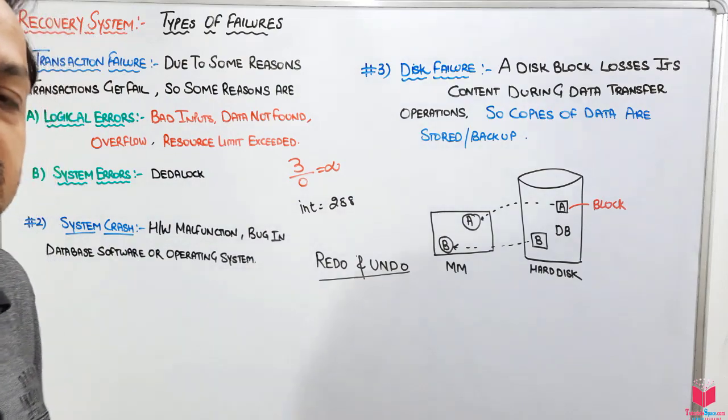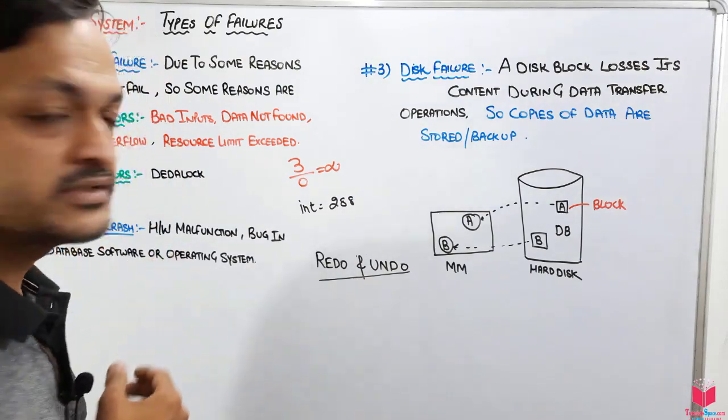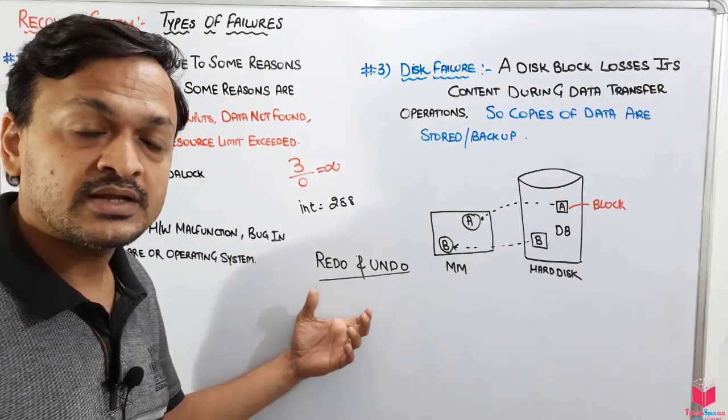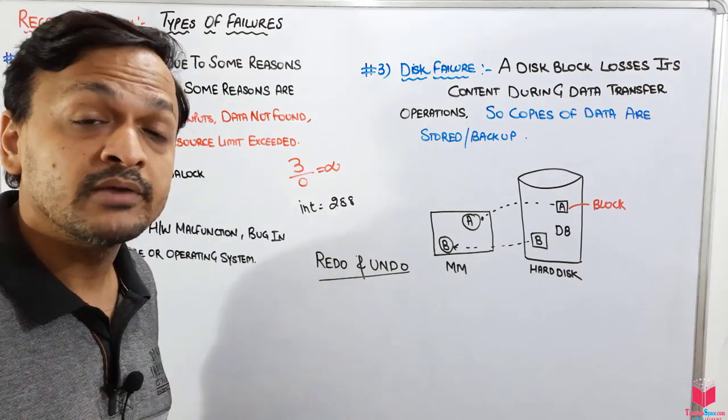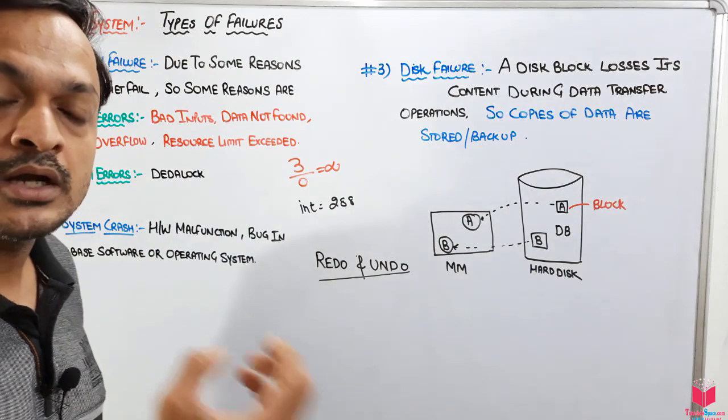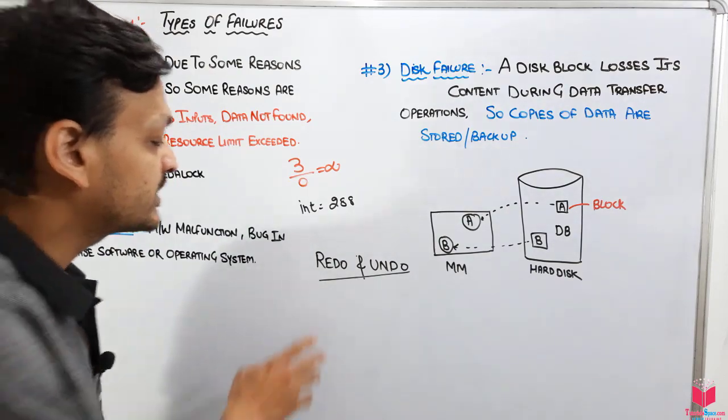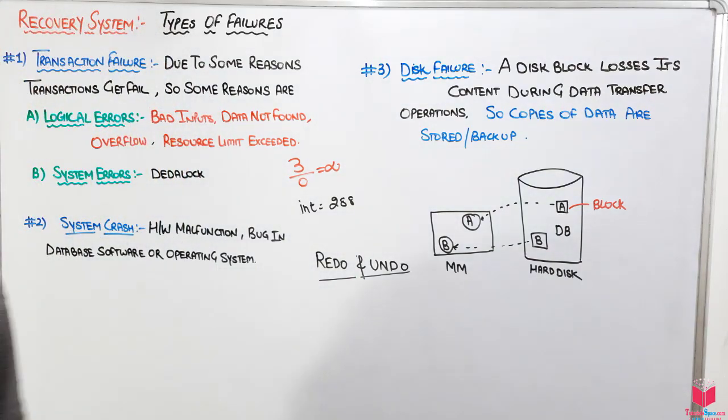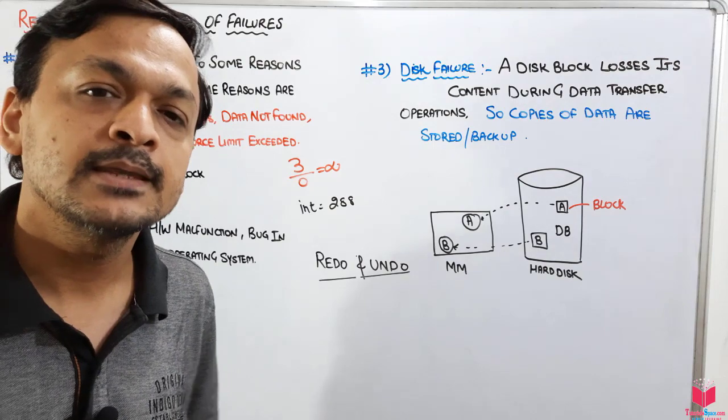These are the two operations basically which are used in the transaction for recovering from the system. We will discuss first of all what are these operations, because in the upcoming videos we are just going to say redo the operation, do the undo operation, so we should know what exactly these operations are. If my videos are helping you, please like and share this video, subscribe the channel. Thank you.